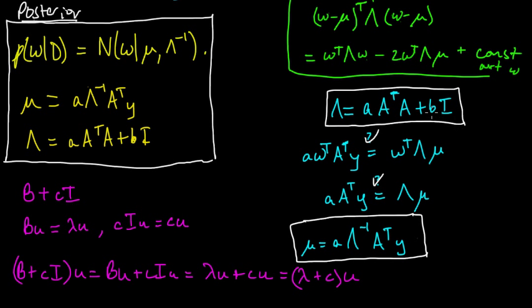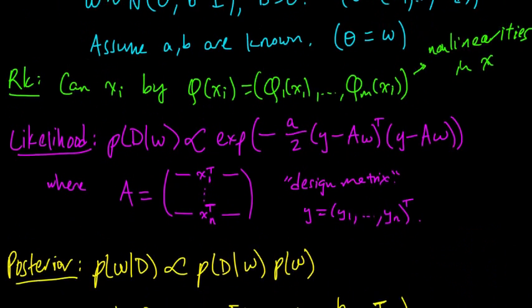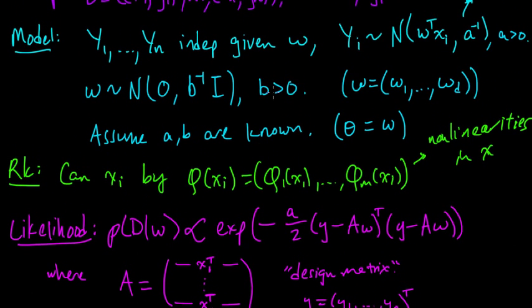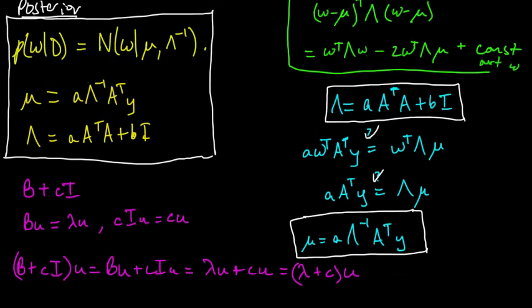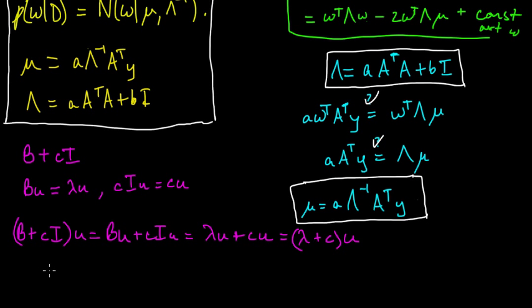So this shows that lambda plus C is an eigenvalue for B plus C I with eigenvector U. And so, we've got it now. So B was a strictly positive number. Remember, B was the precision. Where do we put that? Let's see, B. Right, B was the precision here. And B was strictly positive. So, so C here, if this C is strictly positive and lambda is greater or equal to 0. So this shows that if lambda is greater or equal to 0 and C is strictly positive, then, of course, lambda plus C is strictly positive.